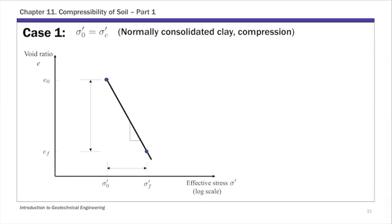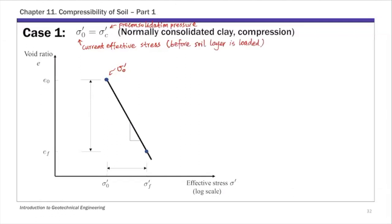The first case: sigma naught is the current or present effective stress in the soil, and sigma_C prime is the pre-consolidation pressure. This first scenario is where your current effective stress in the soil layer equals the pre-consolidation pressure — that by definition is normally consolidated clay. On this idealized plot with a straight line, the initial effective stress is shown before any loading is applied.